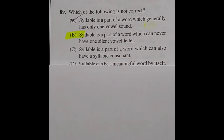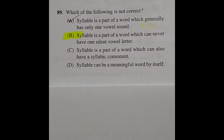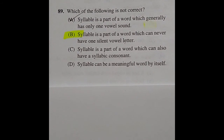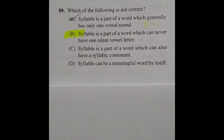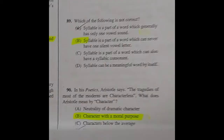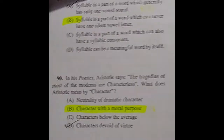Question 89: Which of the following is not correct? The right answer is option B: a syllable is a part of a word which can never have one silent vowel letter.